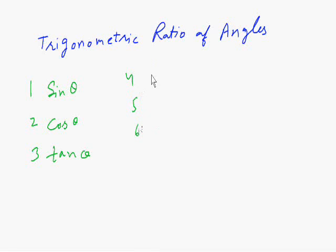The fourth, fifth, and sixth are just the reciprocals of these three ratios. Cosec theta is just the reciprocal of sin theta.